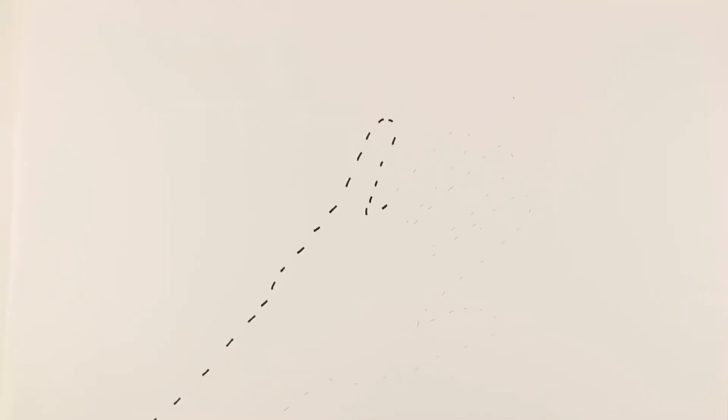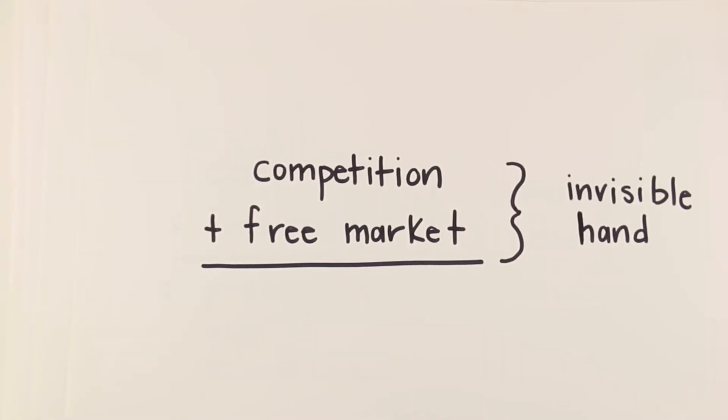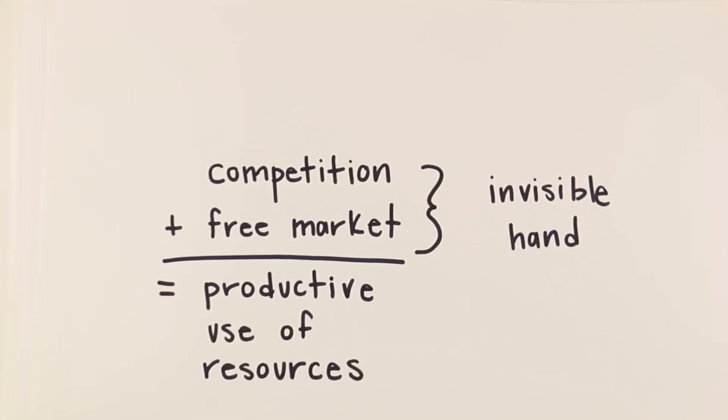Smith also wrote about a concept he described as the invisible hand. The idea was that with competition among individuals, together with free market principles, the economy would be guided by an invisible hand that would guide resources to their most productive use. In other words, the economy should be free from government control and allowed to work itself out.